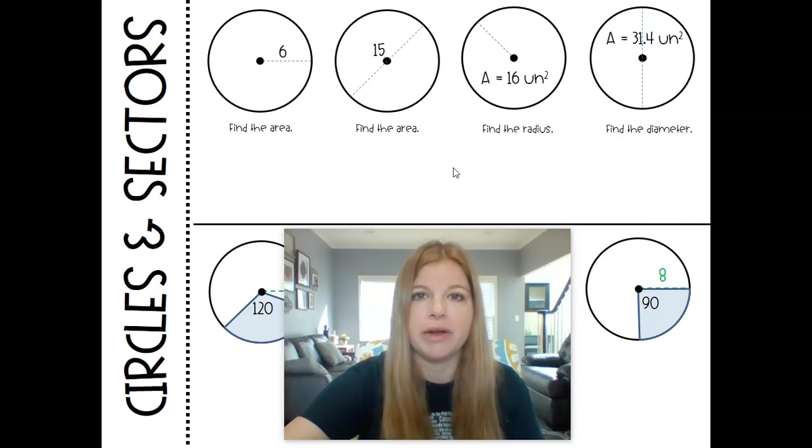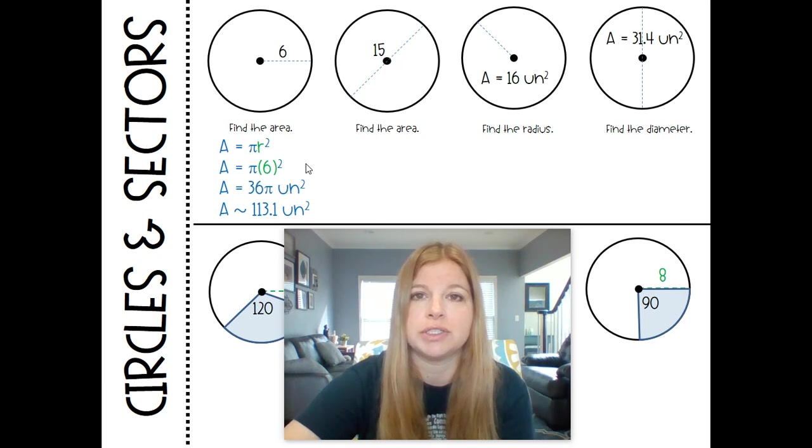Let's look at some more area formula problems. Really simple: if I give you the radius, here clearly the radius is 6. So the formula is just pi times 6 squared. 6 squared is 36, so I can call it 36 pi or put in my calculator and get 113.1.